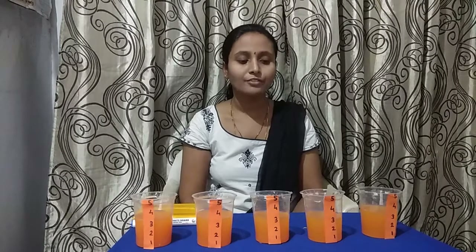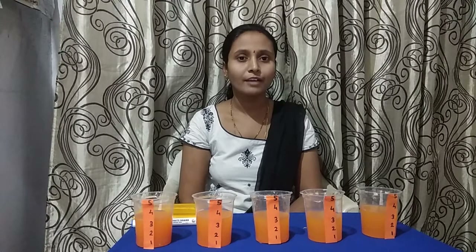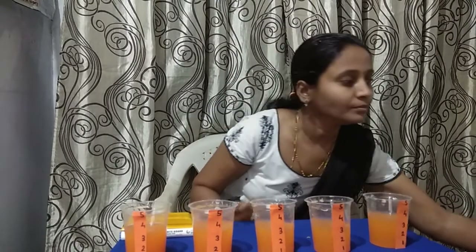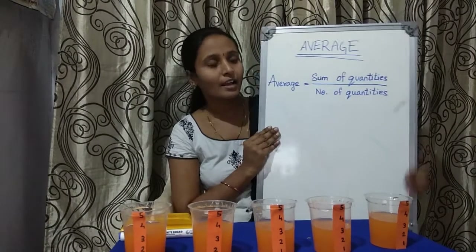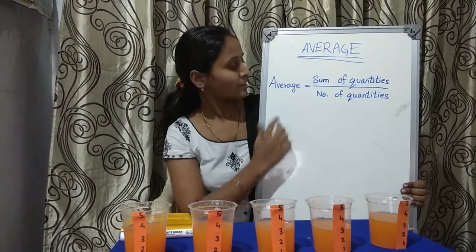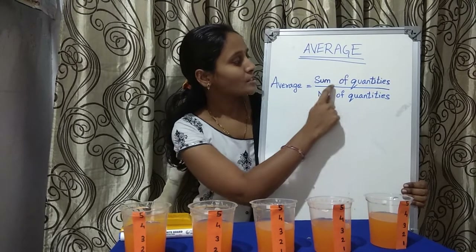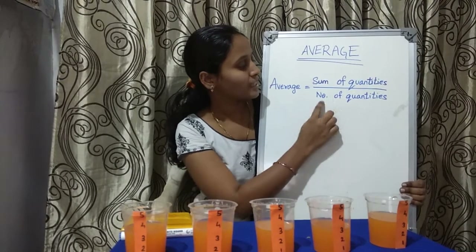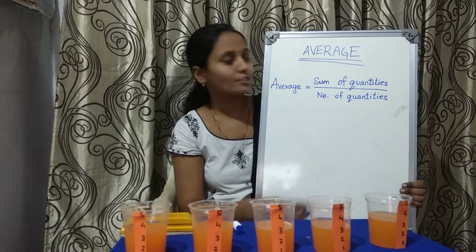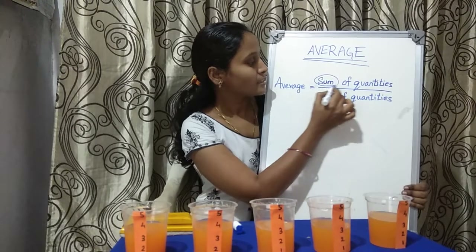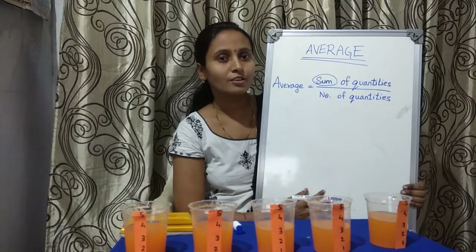Shall we see the formula for average? We will also find the average of this same set of values using the formula. The formula is: average is equal to sum of quantities divided by number of quantities. Sum of quantities means the answer of addition — sum means we add all the values.